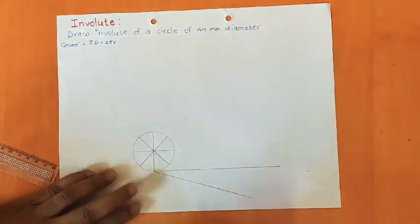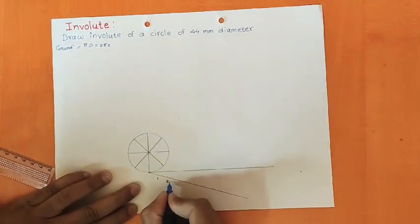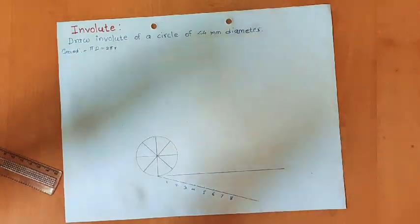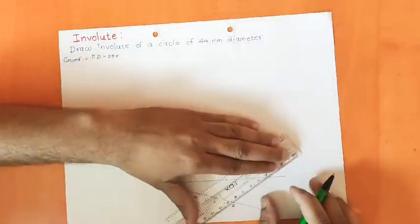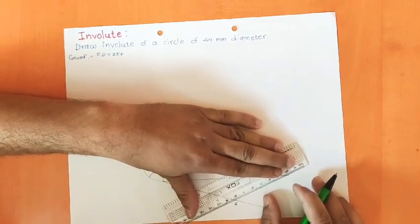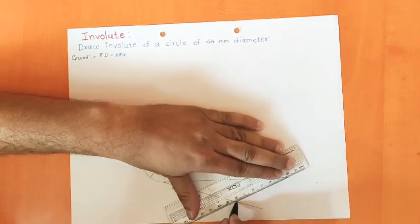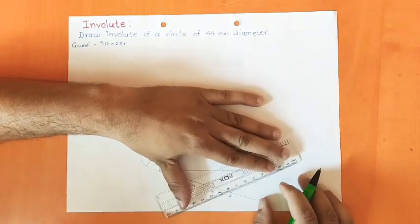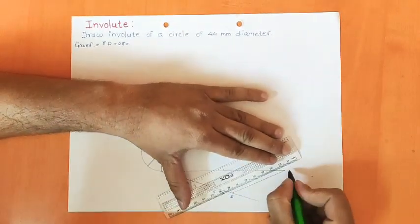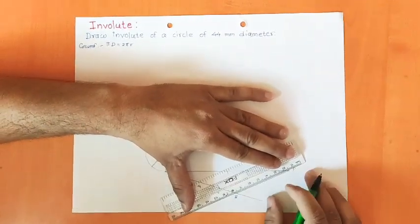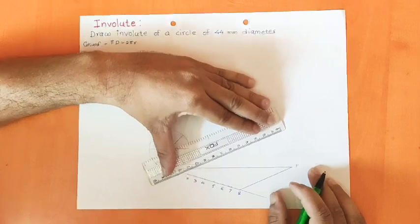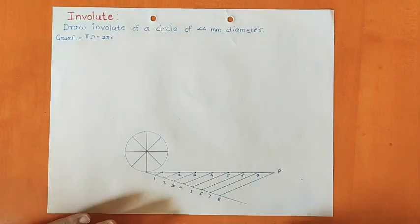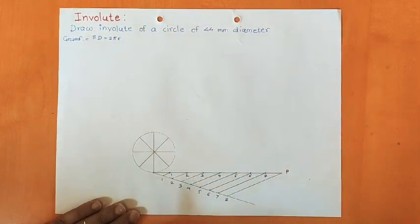Once you mark the points, name them: the next point is 1, 2, 3, 4, and the last is point number 8. Since we want to divide this line into 8 equal parts, join the last point number 8 to the end of the line. Then set your drafter scale parallel to this joining line and draw parallel lines through all intermediate points. This divides the tangent line into 8 equal parts. Name the starting point O.